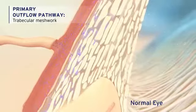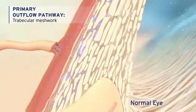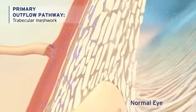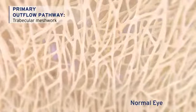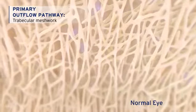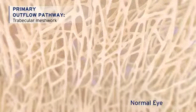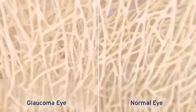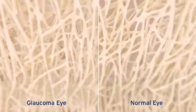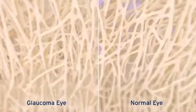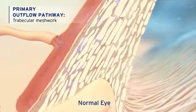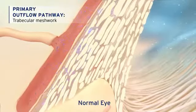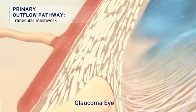Preclinical studies suggest that in normal eyes, Schlemm's canal produces nitric oxide in response to elevated IOP. Further preclinical studies have shown that nitric oxide relaxes cells within the trabecular meshwork, allowing for improved aqueous humor outflow. Clinical studies in patients with primary open-angle glaucoma have found decreased levels of nitric oxide markers in the aqueous humor, leading to the hypothesis that a deficiency of nitric oxide may play a role in trabecular meshwork cell contraction and elevated IOP, as seen in glaucoma.